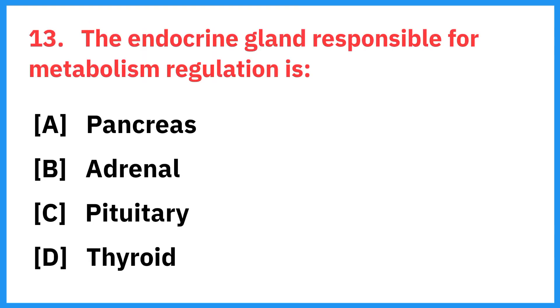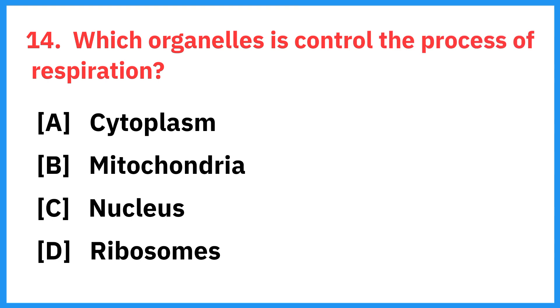The endocrine gland responsible for metabolism regulation is? Right answer is thyroid. Which organelles control the process of respiration? Right answer is mitochondria.